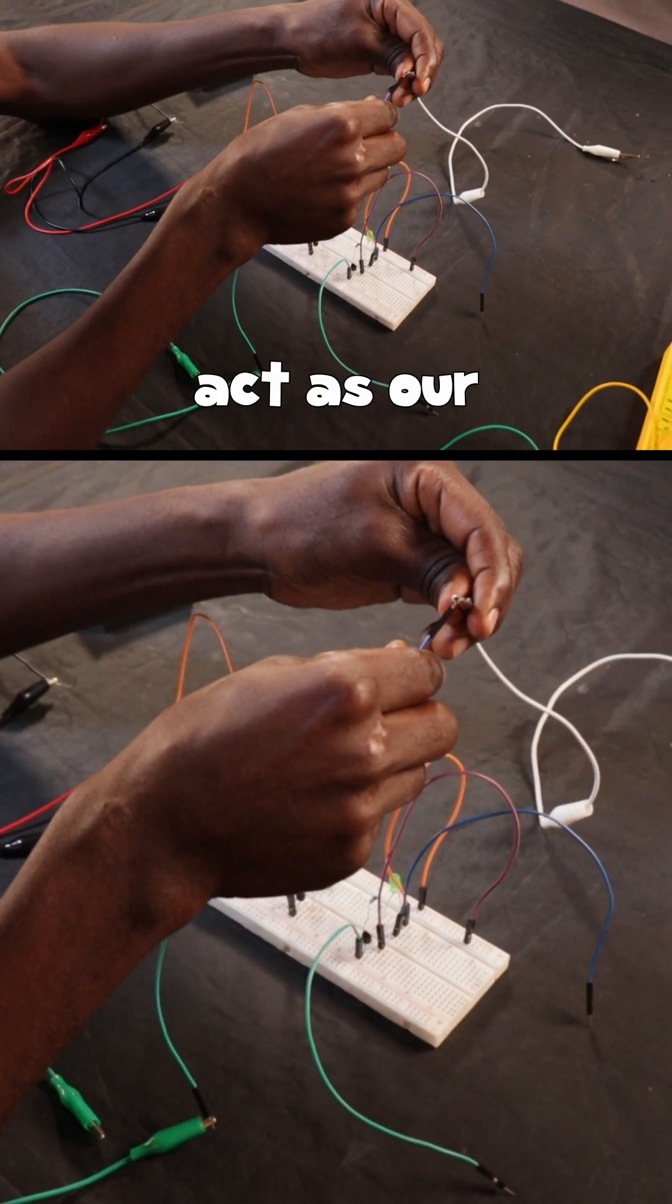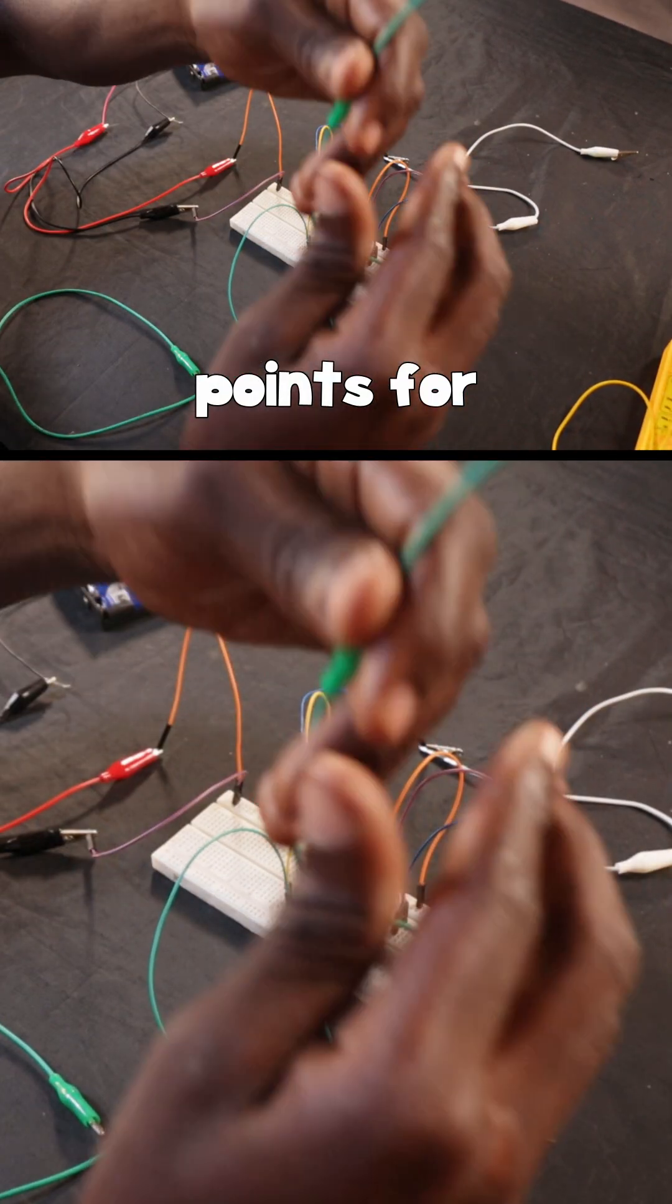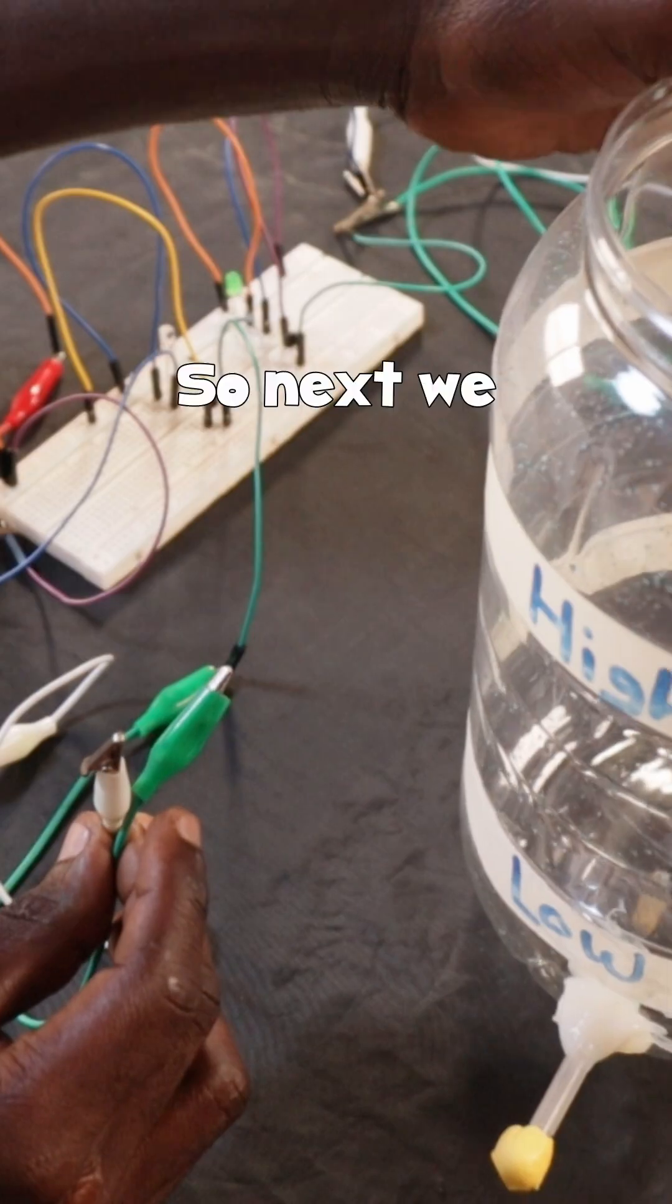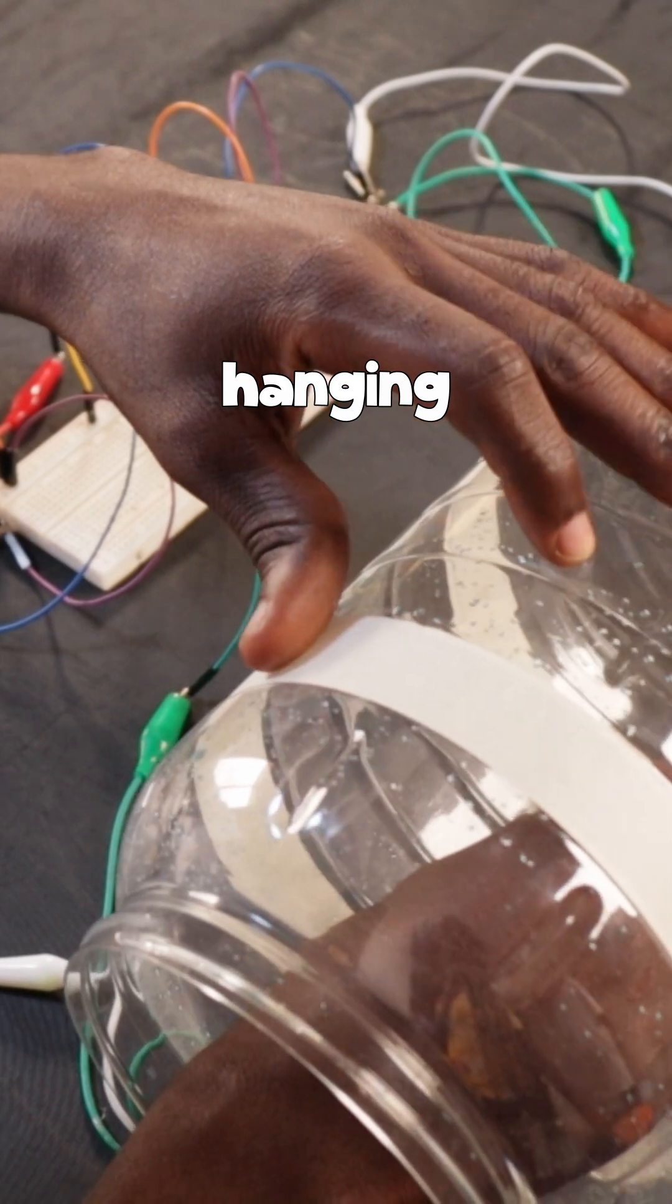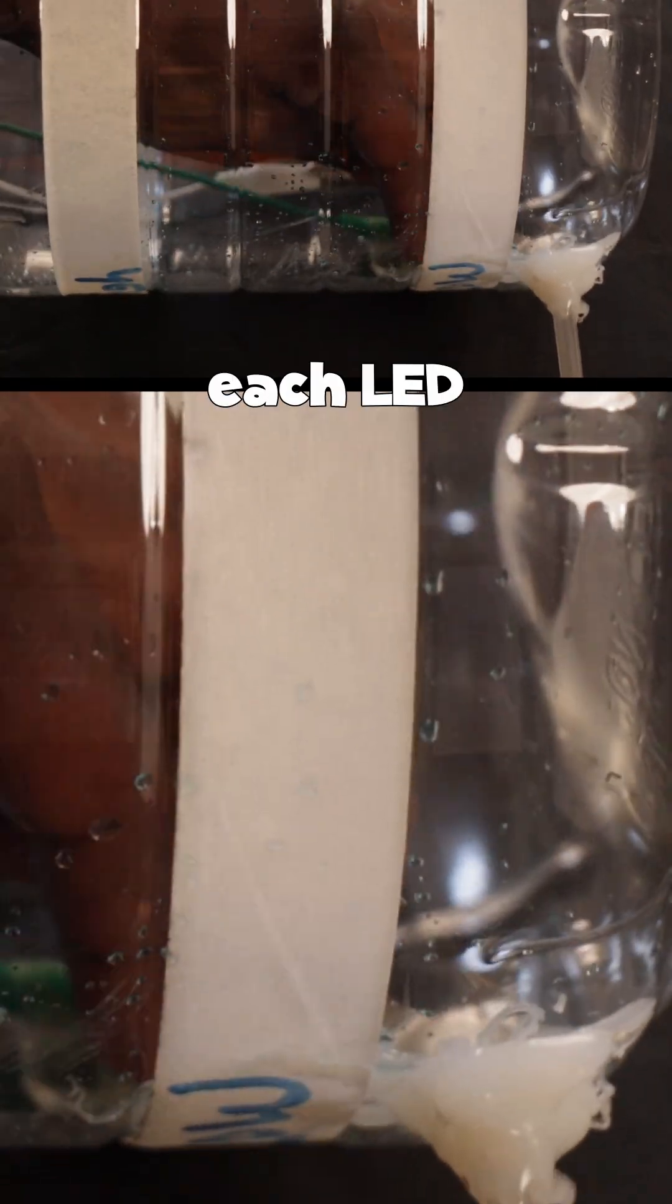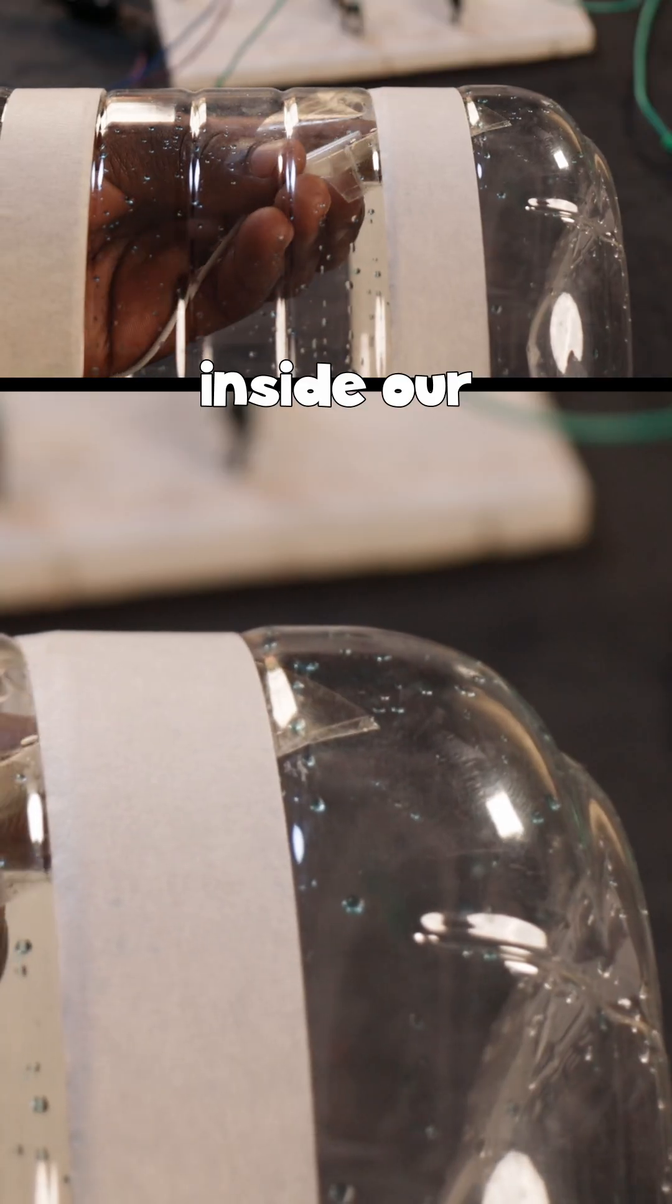will act as our sensing points for the two LEDs. Next, we are going to attach these two hanging wires for each LED inside our water reservoir.